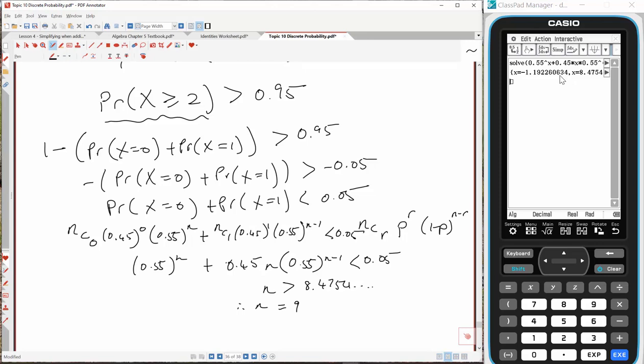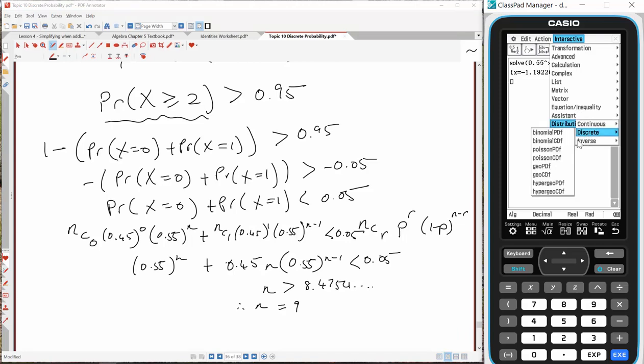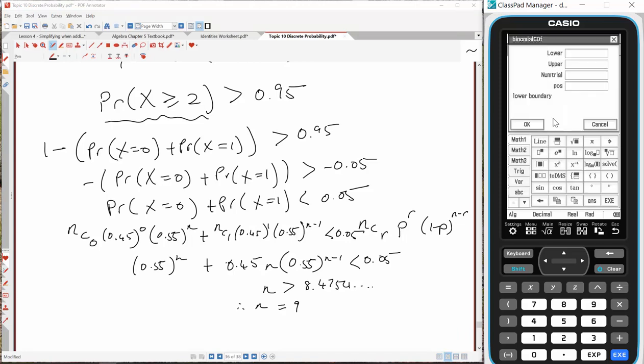I'll explain how I know that this will be the right value. I'm going to go over to interactive distribution, discrete, and I'm going to run binomialcdf. My lower value is going to be 2, my upper value is going to be 9, number of trials is 9, chance of success is 0.45. What that is saying is we wanted to win at least 2 games, so 2, 3, 4, 5, 6, 7, 8, up until the number of trials. This is suggesting that the number of trials should be n equals 9. What should happen when I hit okay on this is that I get a number more than 0.95.